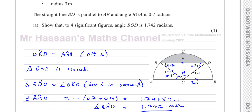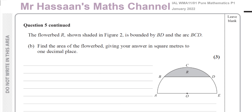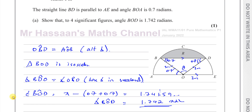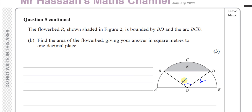Now part B: the flower bed R, shown shaded in figure 2, is bounded by BD and arc BCD. We want to find the area of the shaded region. We know the radius is 3 meters and the angle is 1.742 radians.